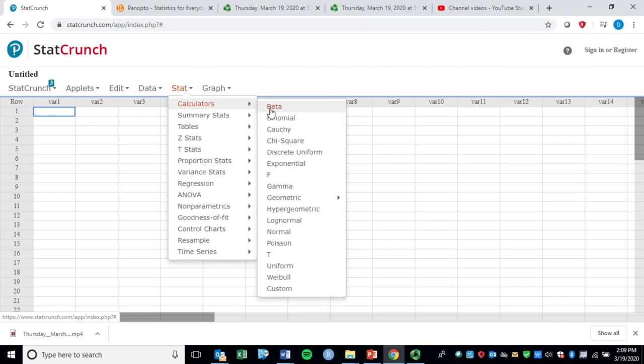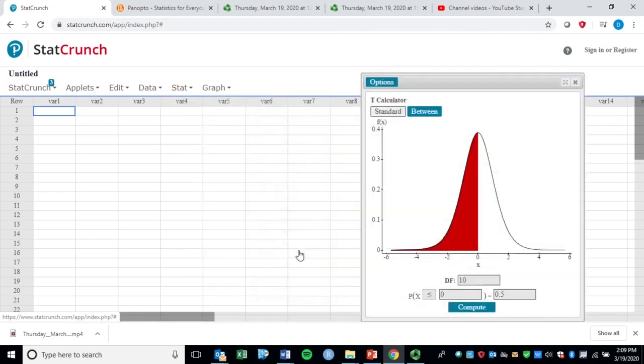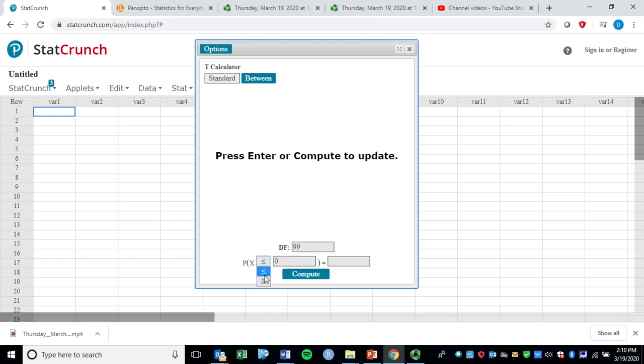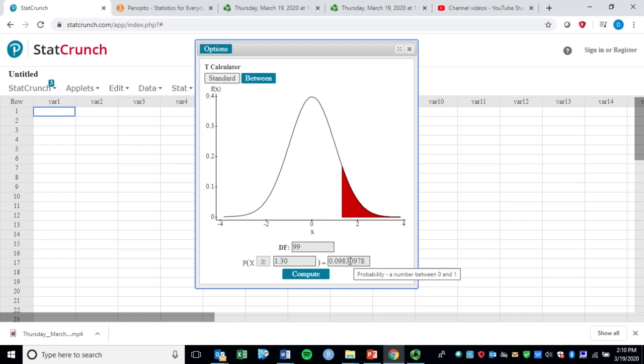Let's go to Stat, Calculators, and we'll come down to the t-distribution. So we'll move this over. Put in our 99 degrees of freedom. Oh, we gotta change this to greater than. All right. And our test statistic. Take it to two decimal places so that your test stat goes here. So we got 1.30. Go ahead and hit Compute. And we got here .0983. And since the next number is zero, we can just kind of chop it off right there. Rounding properly.